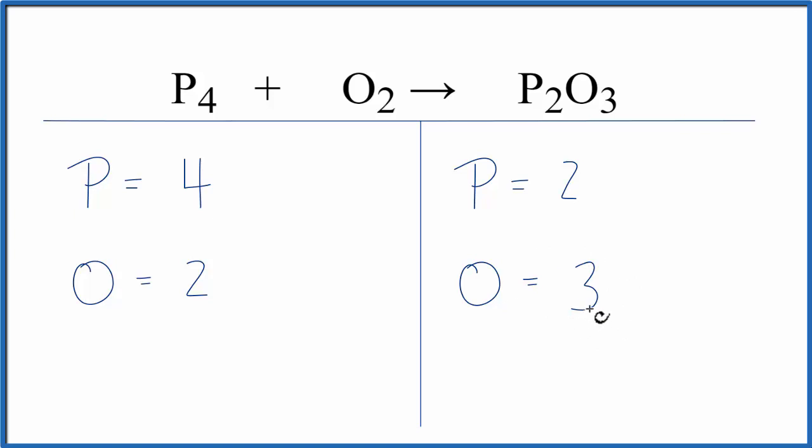When I have an odd number of oxygens I like to get that to an even number. That makes it a lot easier to balance.